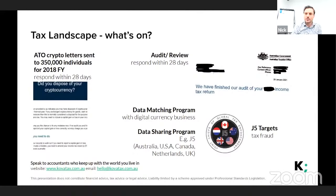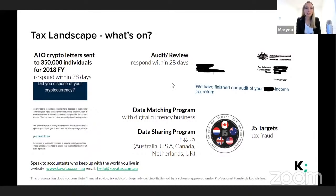Consider the idea that cryptocurrency can't be tracked and therefore no tax needs to be paid. The ATO introduced a data matching program, and from 2019 they've been precisely watching this space. Over time the ATO gets more resources and information, and eventually it will cover every exchange in Australia and every service. The data matching program is already working, and the ATO has already obtained a lot of information from the larger Australian exchanges.